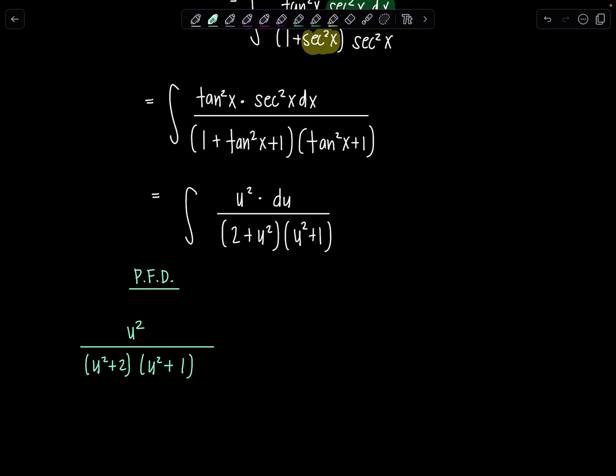Those are my two irreducible quadratic factors. That means for my decomposition, the numerator would have the form au plus b and I'll put one of those factors, plus cu plus d and we'll put the other factor. Now to solve for the constants abcd, I'm going to multiply through by the lcd, which is u squared plus two and u squared plus one.